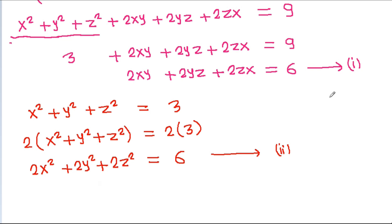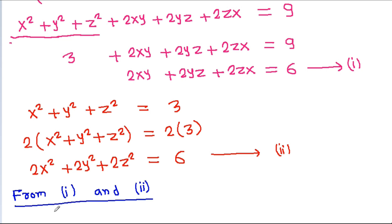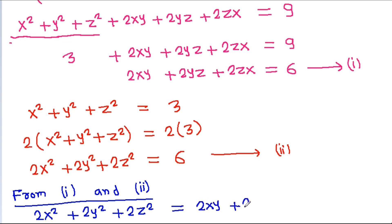And from equation 1 and equation 2, we can say that 2x square plus 2y square plus 2g square is equal to 2xy plus 2yg plus 2gx.